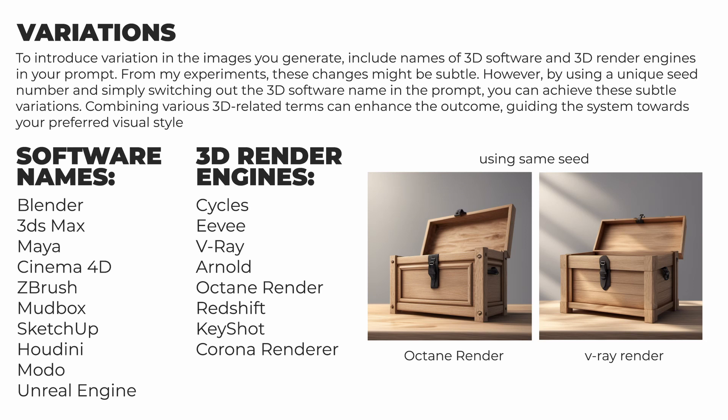To introduce variation in the images you generate, include names of 3D software and 3D render engines in your prompt. From my experiments, these changes might be subtle. However, by using a unique seed number and simply switching out the 3D software name in the prompt, you can achieve these subtle variations. Combining various 3D-related terms can enhance the outcome, guiding the system towards your preferred visual style.